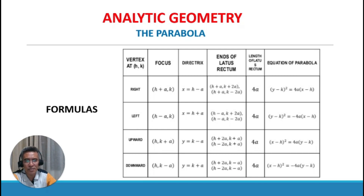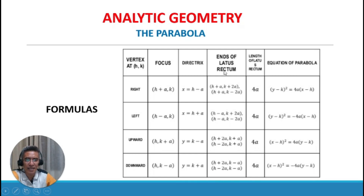For a parabola with vertex at (h, k) opening to the left: the focus is at (h minus a, k), the directrix is x equals h plus a, the endpoints of the latus rectum are (h minus a, k plus 2a) and (h minus a, k minus 2a), the length of the latus rectum is 4a, and the equation is (y minus k) squared equals negative 4a times (x minus h).